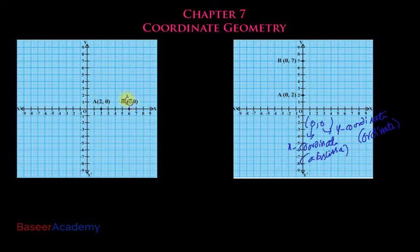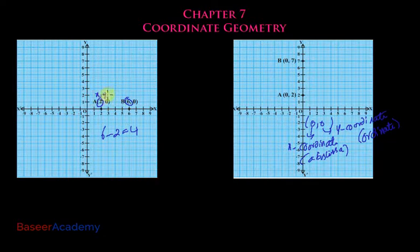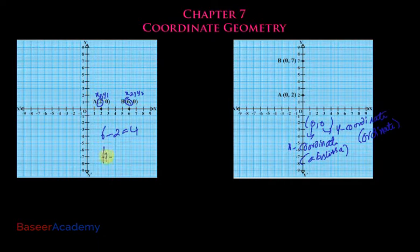We can get this more easily: six minus two is four. If we label point A as (x1, y1) and point B as (x2, y2), then x2 minus x1 gives us the distance. So x2 minus x1 gives the distance when the two points are located on the x-axis.